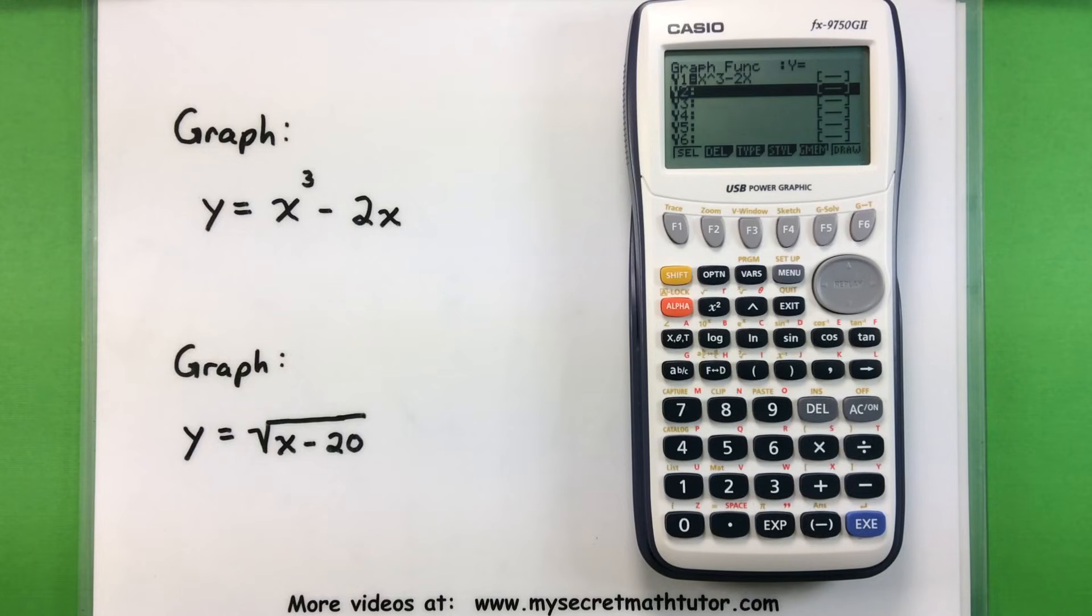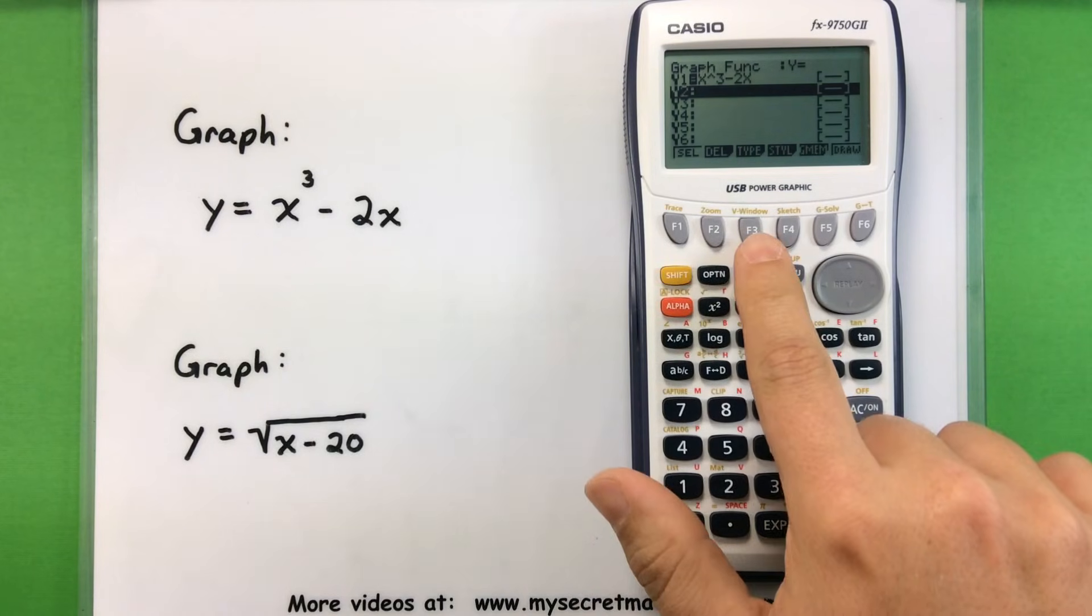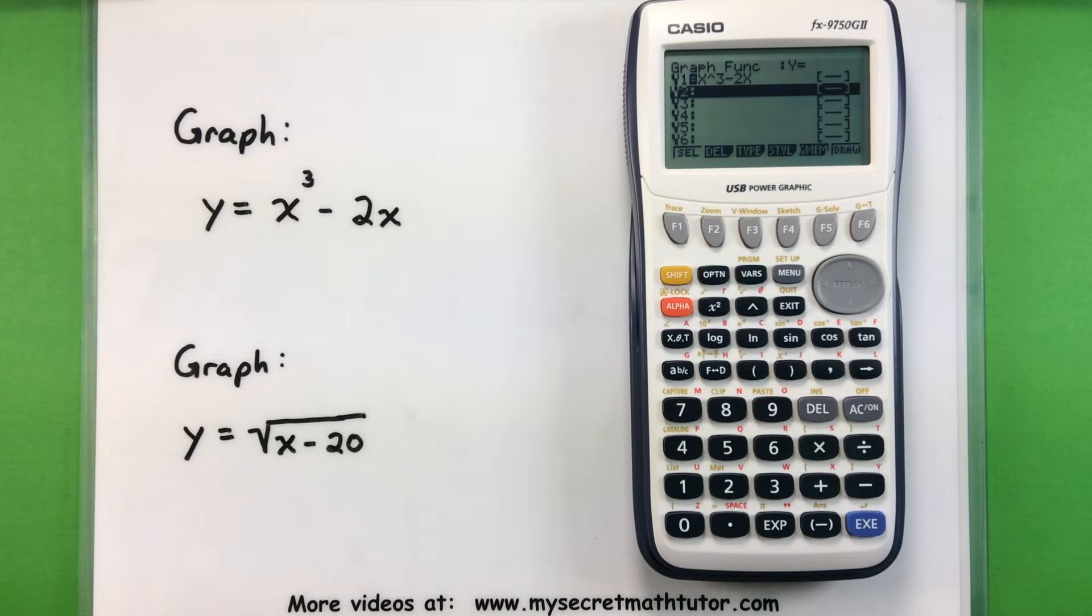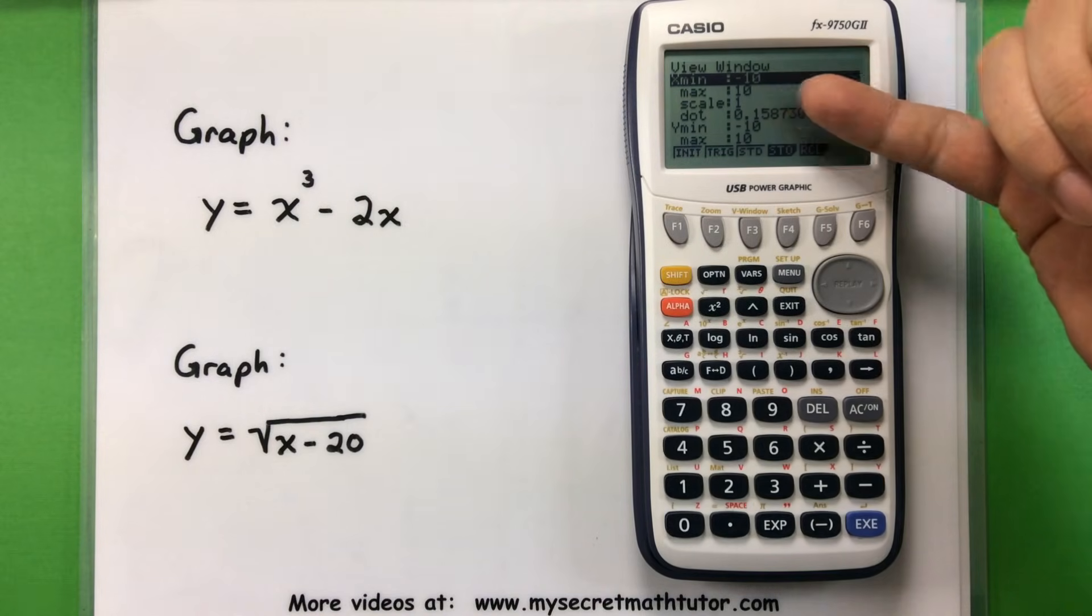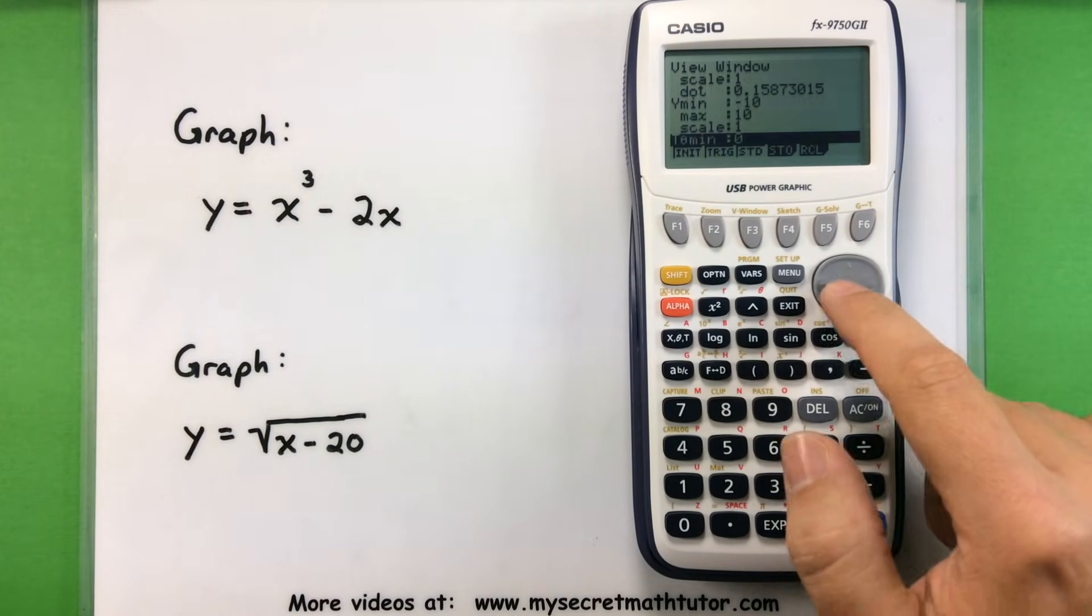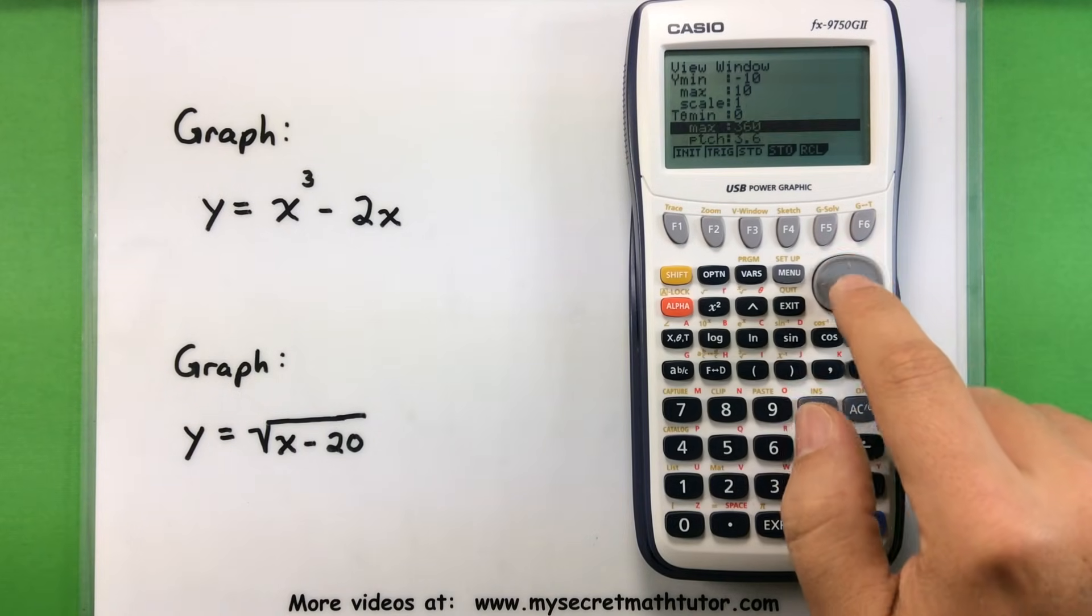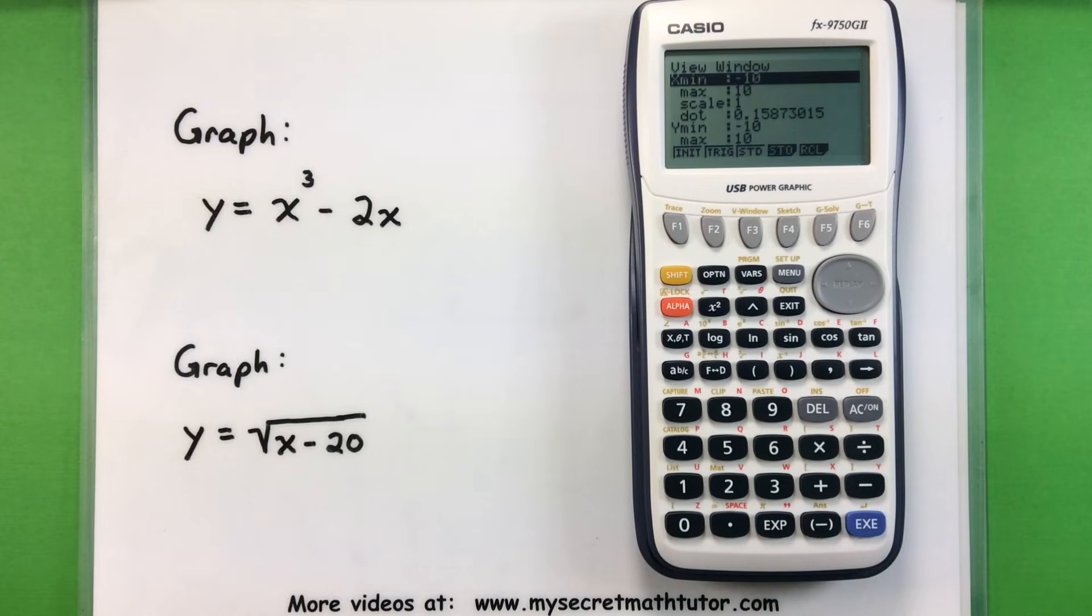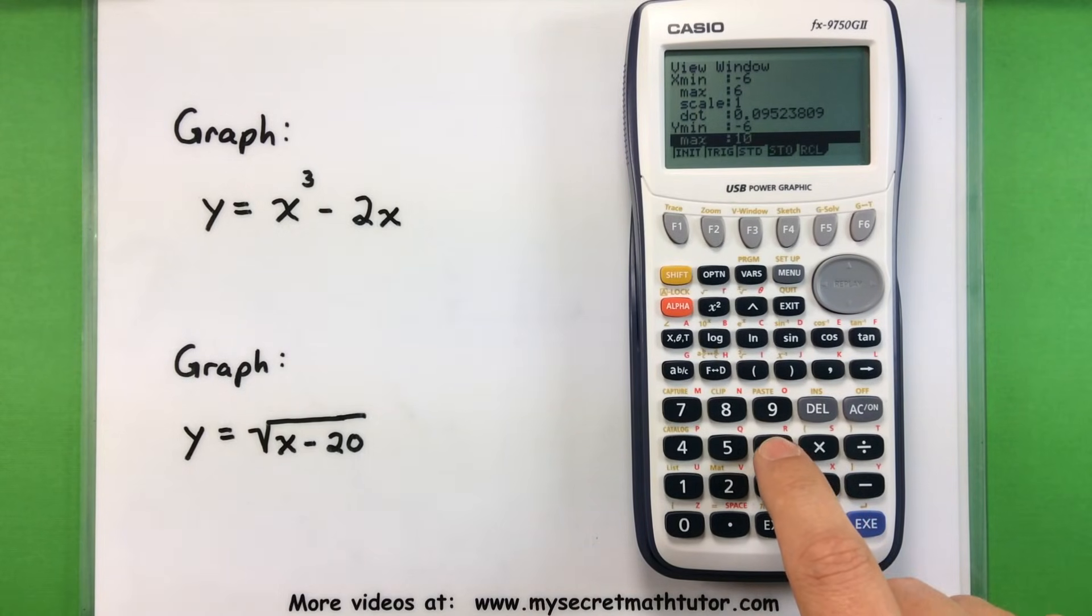If I want to adjust the window and get a really good picture of this, the next place I want to go is under the viewing window, or V-window. To get to that, I'll have to press shift and then F3 and make some adjustments. By default, usually you'll find that your window's x min and x max will be between negative 10 and 10, and the same thing will apply to your y min and your y max. It'll be between negative 10 and 10. For this particular equation that I'm graphing, I think it looks best when the x minimum is around negative 6, and the x maximum is a positive 6. Let's type in negative 6, enter, positive 6, enter, and that'll adjust my x values. Now we'll arrow down over to the y minimum, so y minimum, negative 6, enter, and y max, 6, enter.